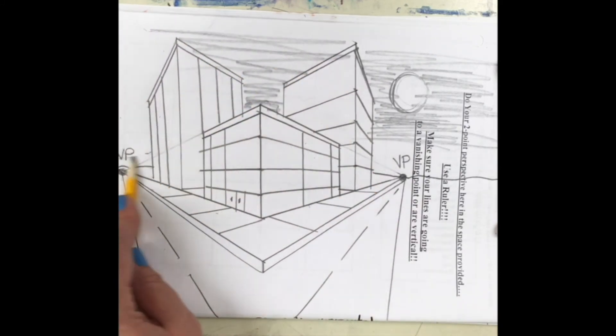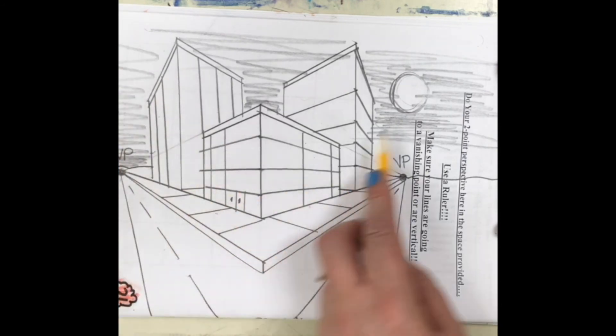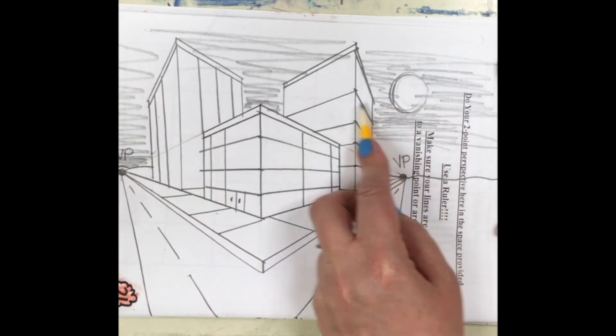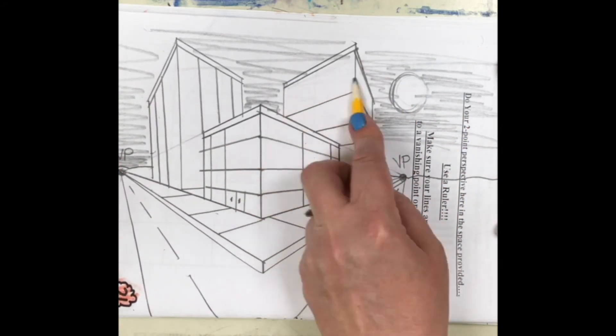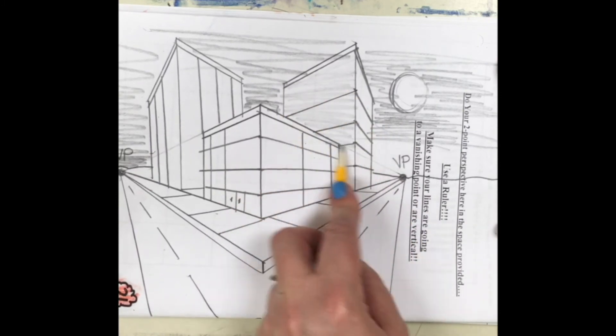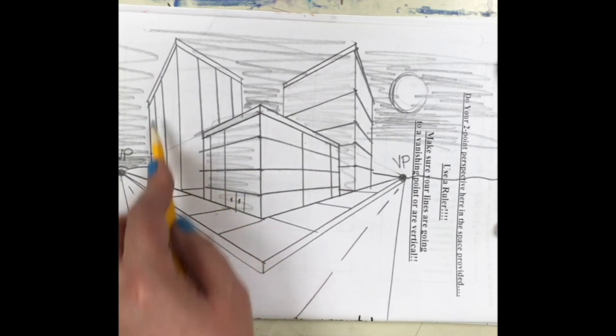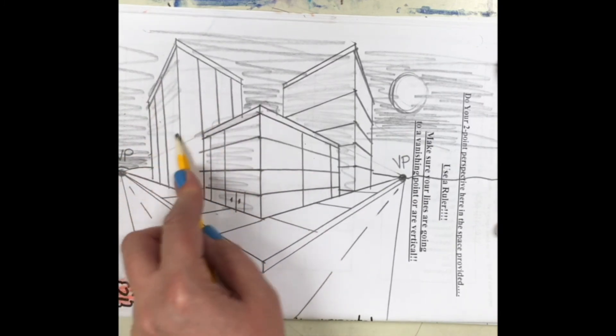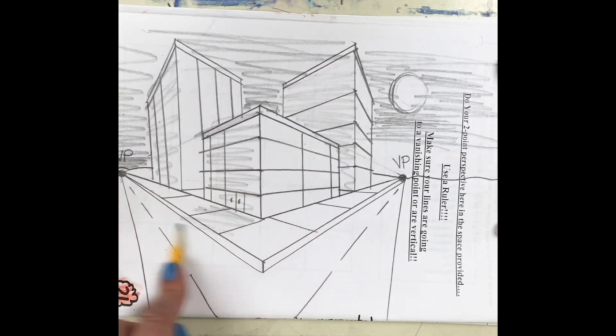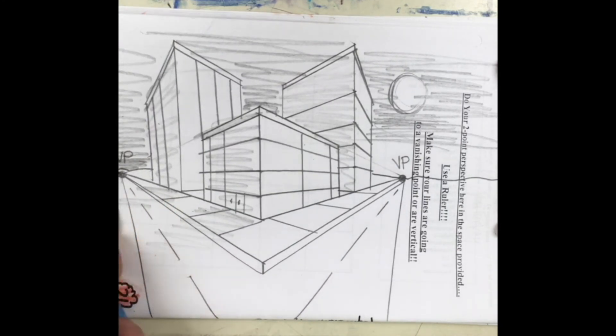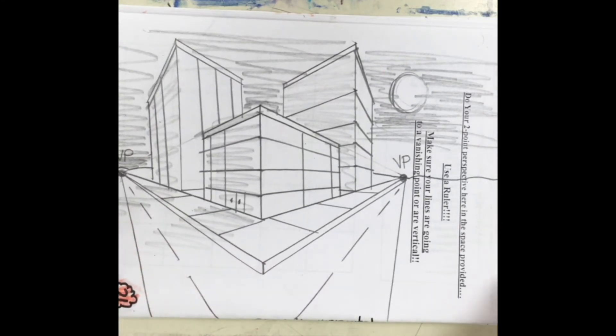And then I could do shading. So this is where it's going to be light. This is where it's going to be dark. It's going to be dark. I'm going to draw some shadow cast out here. Just a little, you know, you can do lots of different things.